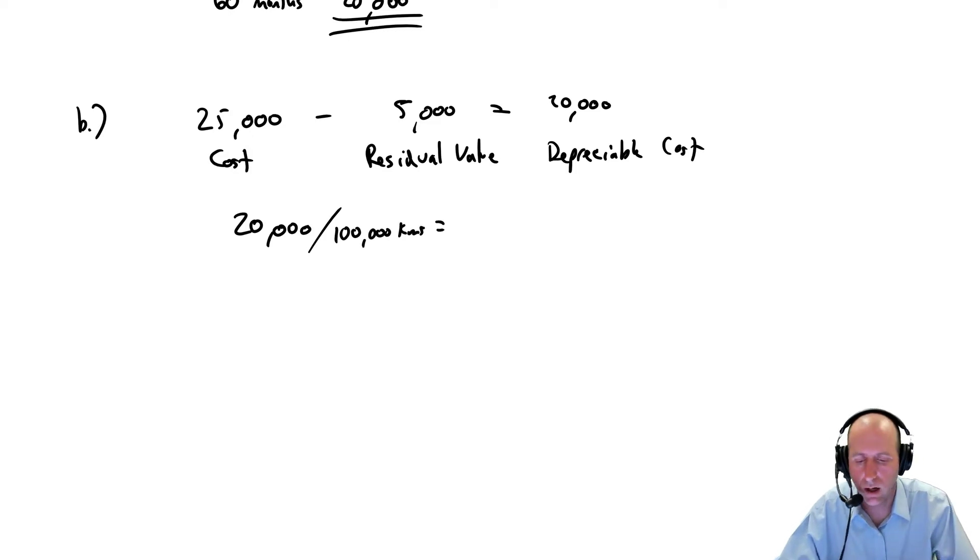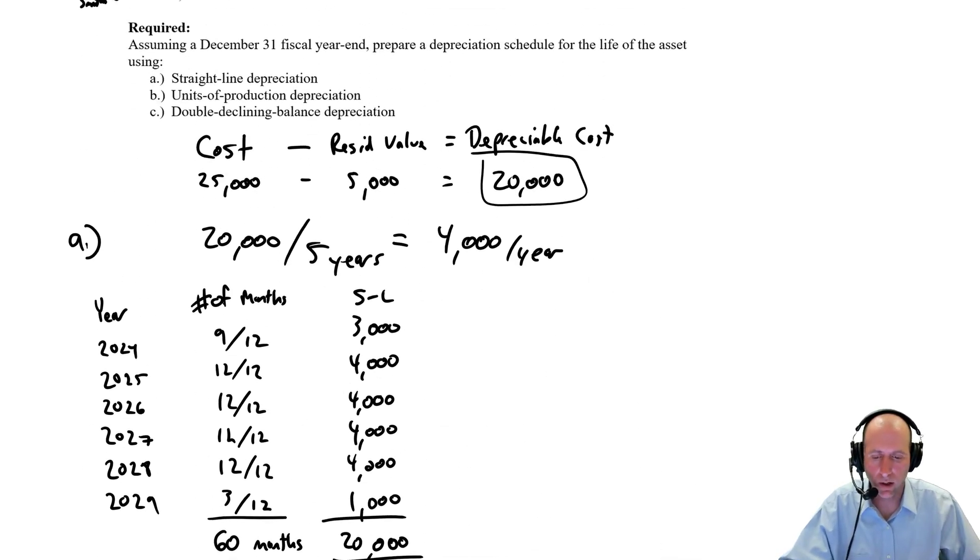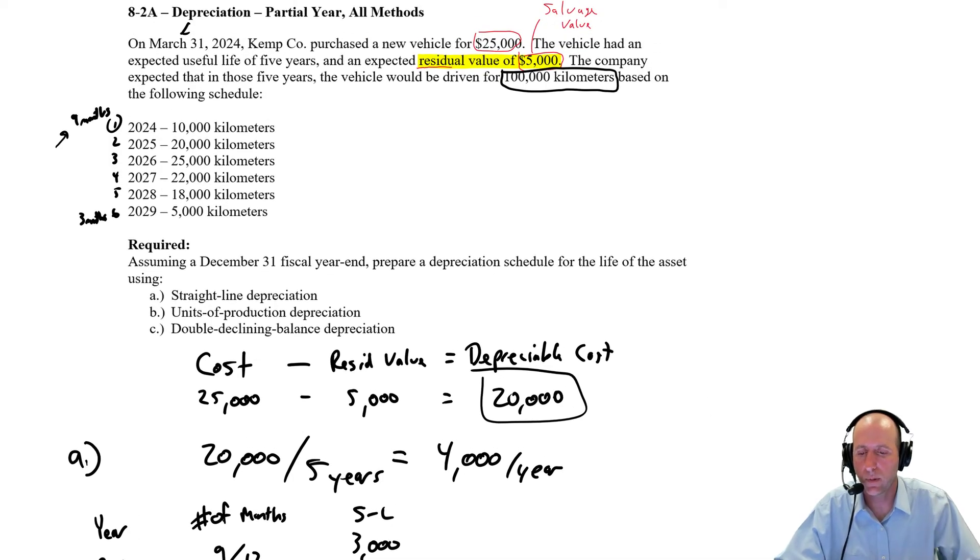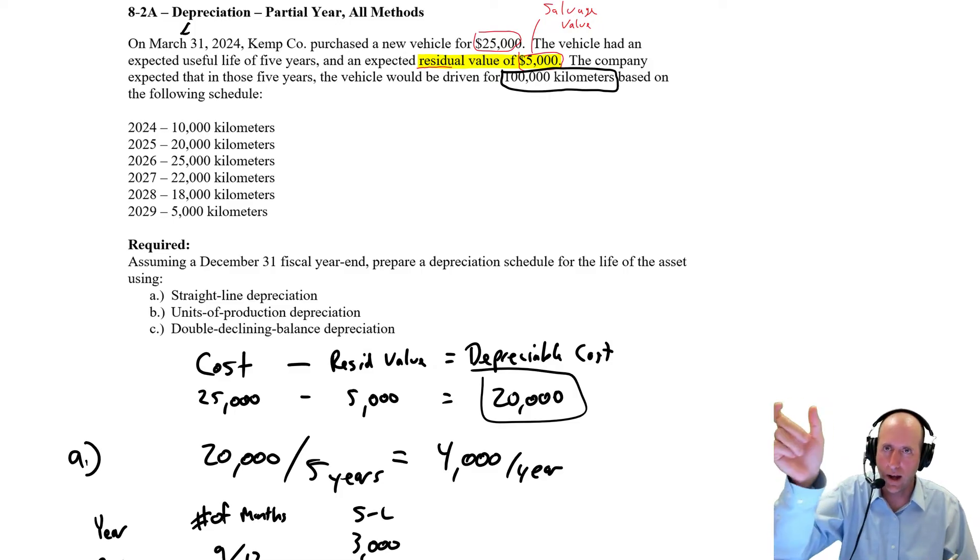And we get a new rate here. Our rate is $0.20 per kilometer. So when I go to calculate my depreciation, I just take the number of kilometers driven. And in reality, you might prepare this schedule in advance, and this would be an estimate. In reality, you would look at the odometer on your car, how many kilometers you drove. You would multiply it by 20 cents, and you would say, oh, there's my depreciation this year.